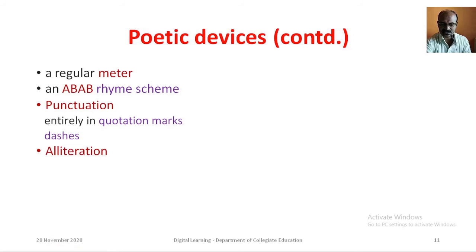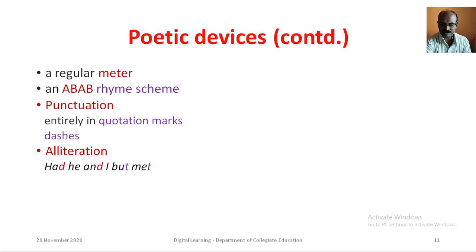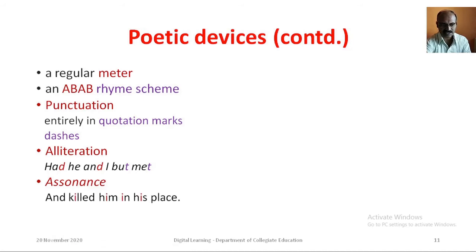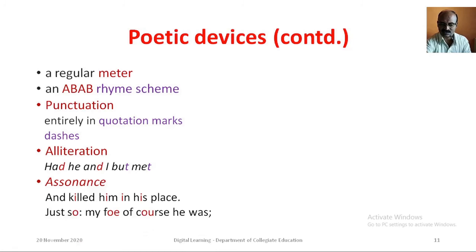Alliteration is the repetition of a speech sound in a sequence of nearby words; usually the term is applied only to consonants. For example: 'Had he and I but met.' Assonance is the repetition of identical or similar vowels, especially in stressed syllables, in a sequence of nearby words. For example: 'I killed him in his place.' Another example is: 'just so my poor poor foes.'